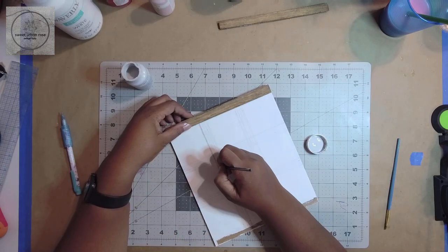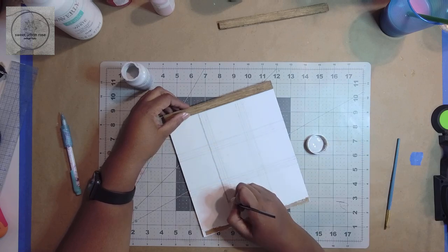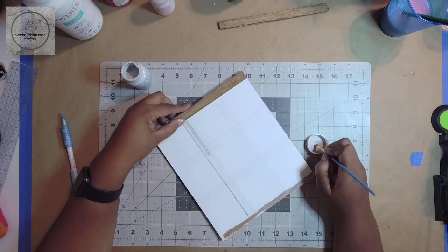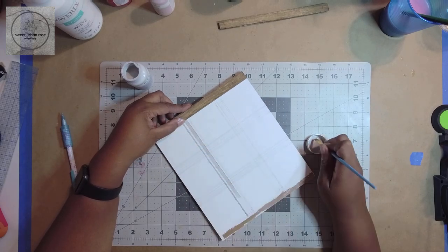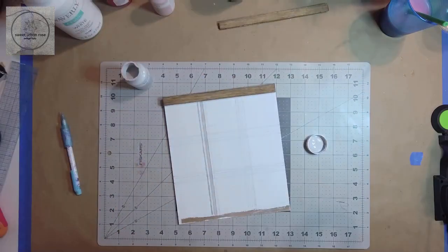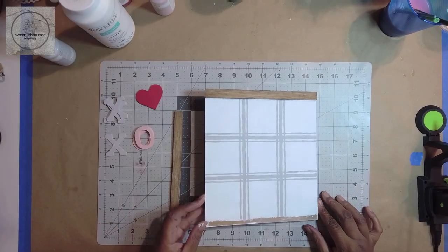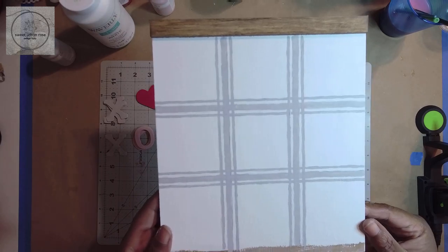Then I used Waverly chalk paint in silver lining and a fine paint brush to fill in the stripes. Here's a close-up of what the board looks like. It's not perfect, but that's what I love about it.